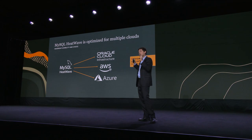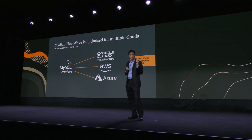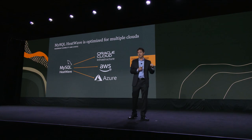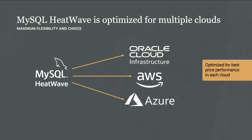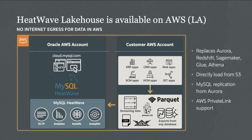MySQL HeatWave is optimized to run in more than one cloud. It runs in OCI and also in AWS, using AWS infrastructure — including Lakehouse — so there is no data egress fee and you can analyze files stored in S3 buckets. Through our partnership with Microsoft, you can also use MySQL HeatWave Lakehouse in Azure. HeatWave Lakehouse is currently in limited availability on AWS and will soon be generally available.